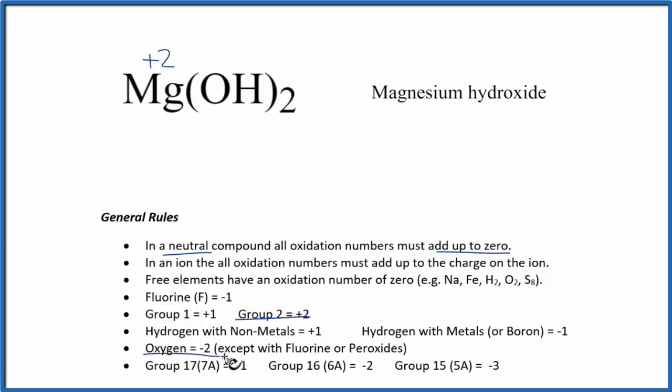Oxygen is negative two, except in a few instances. So here it's got that minus two. Hydrogen, when bonded to nonmetals—oxygen here is a nonmetal—has a plus one.